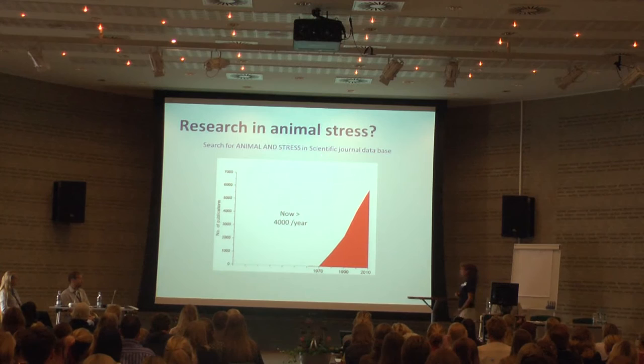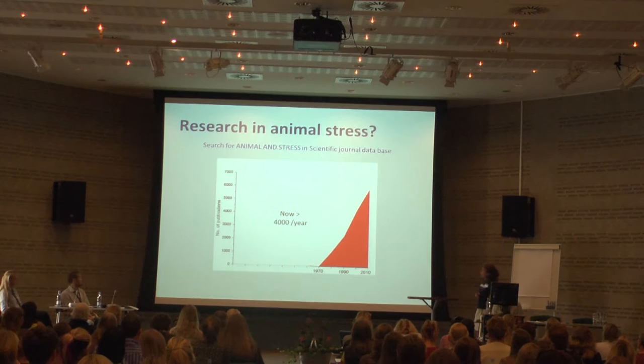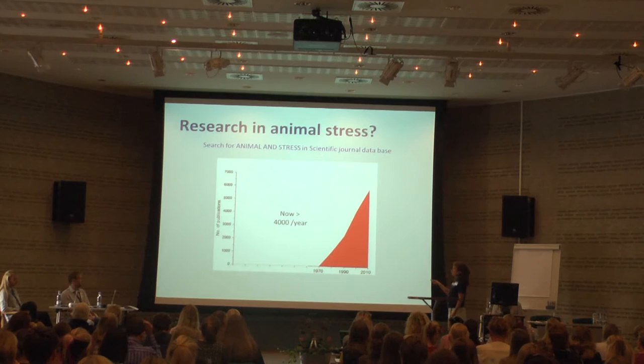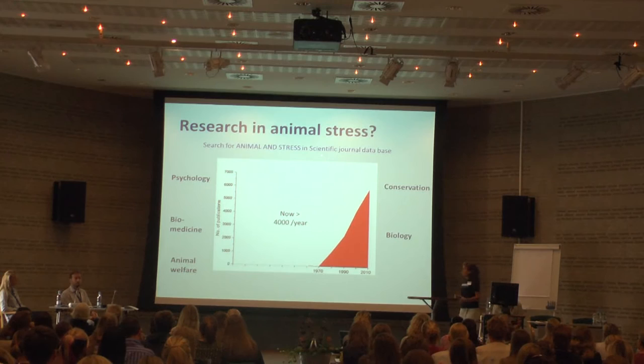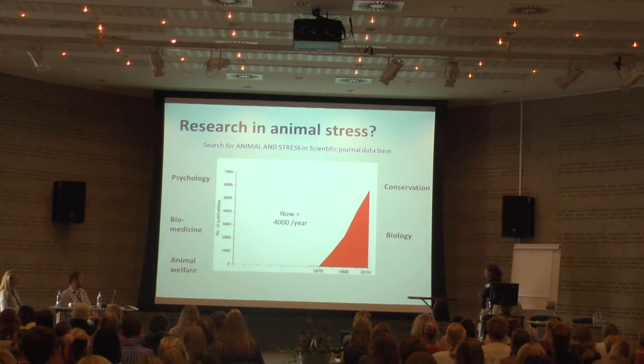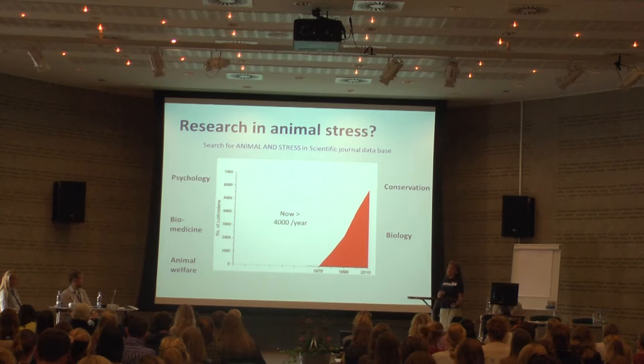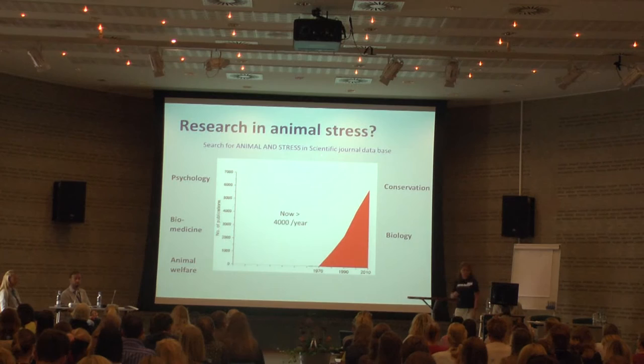When you look at this graph you will understand why. You can see the number of publications dealing with animal and stress which are published yearly. At present it's more than 4,000 publications every year dealing with this topic, in very different scientific areas such as biomedicine, animal welfare, conservation, and so on. I can only suggest that within the area you work, you go back and look for literature within that specific area.